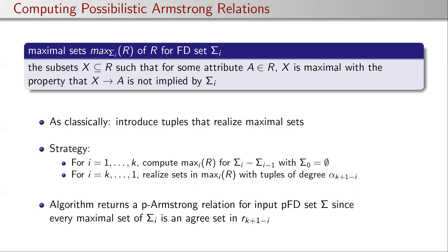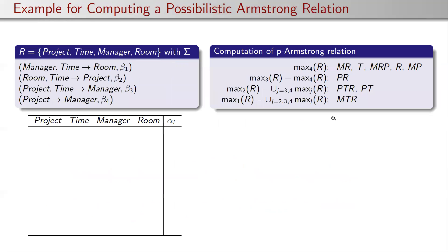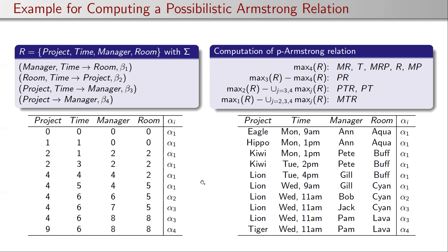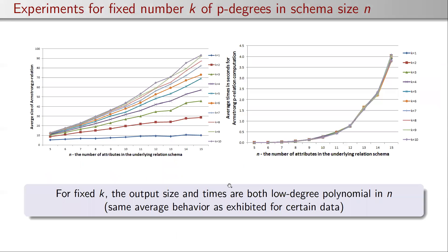Every maximal set in sigma_i is an agree set in this relation. For example, if i equals k, this covers only highly trusted data. We compute maximal sets sigma_4, sigma_4 minus sigma_3, and so on. Starting with an arbitrary alpha_1 tuple, on manager and room we have the same values and different values elsewhere. We then start alpha_2 tuples with matching values only on P and R and different values elsewhere, continuing and assigning possibility degrees. Suitable substitutions lead exactly to the relation given in the example — this is how the computation works.